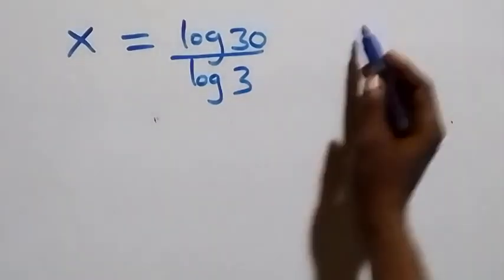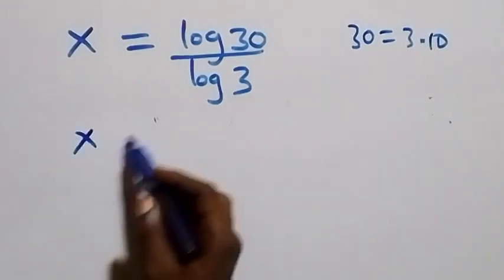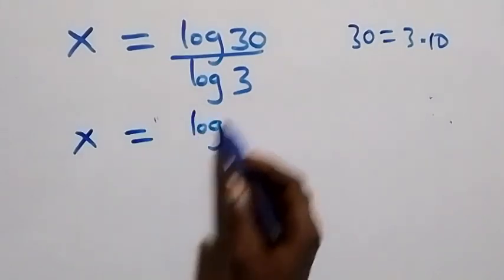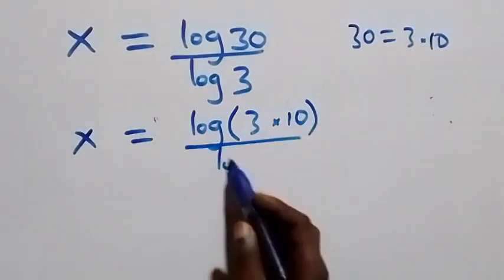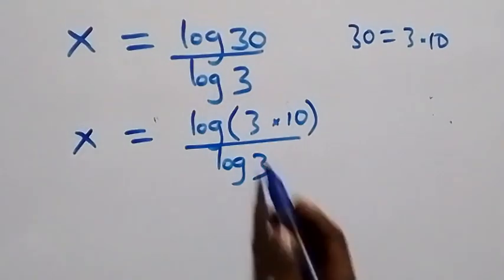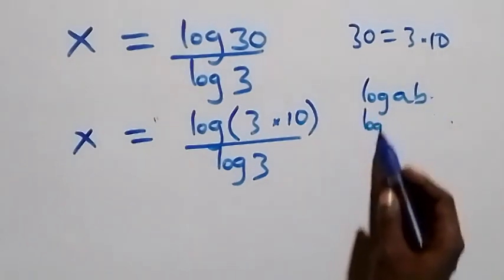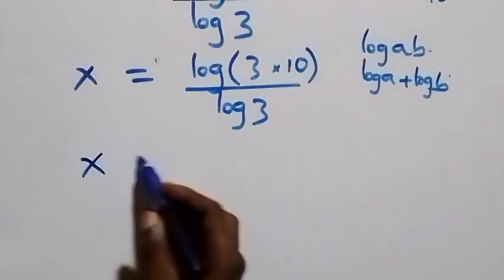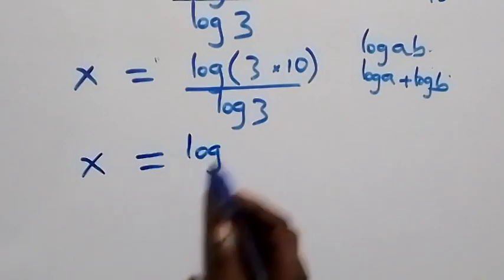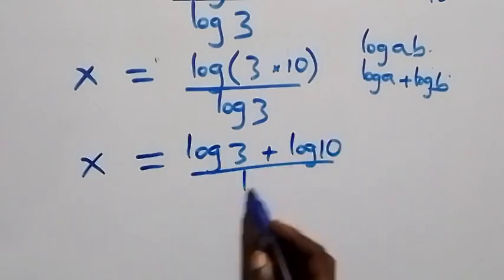We can express 30 as 3 times 10, so we have x equals log of (3 times 10) over log 3. This follows from the law that log of a times b can be written as log a plus log b. So this becomes x equals log 3 plus log 10, all over log 3.